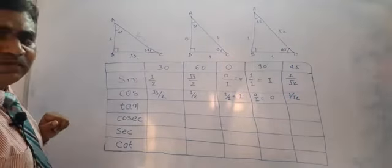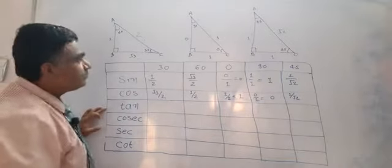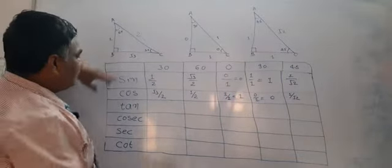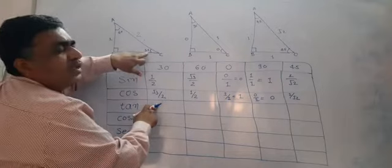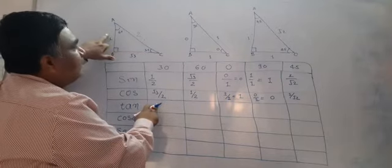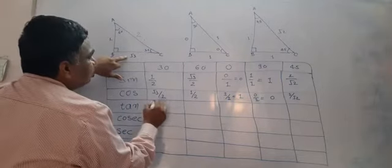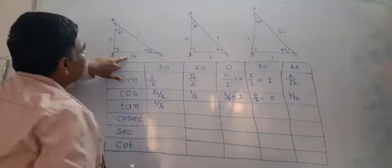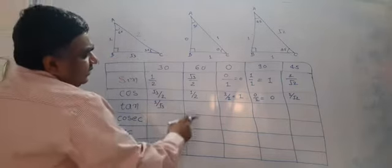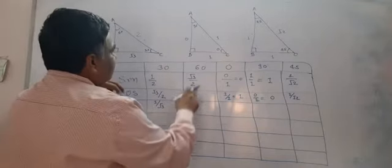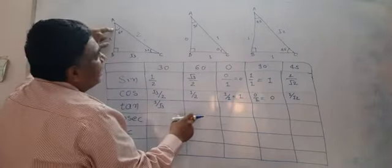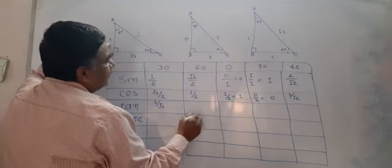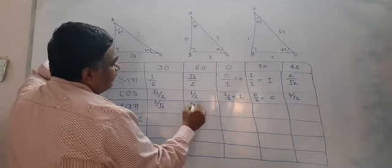Now let's see the value of tan. Suppose you go for tan 30 — opposite side upon adjacent side gives 1 upon root 3. For tan 60, opposite side upon adjacent side gives root 3 upon 1.